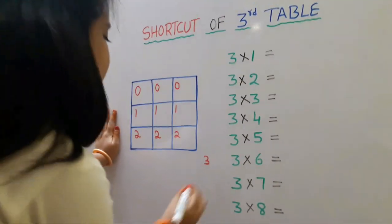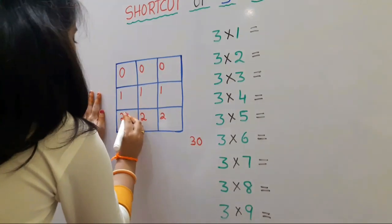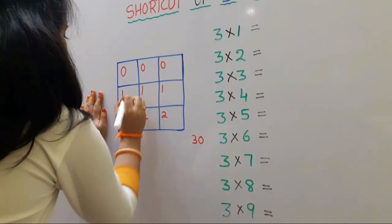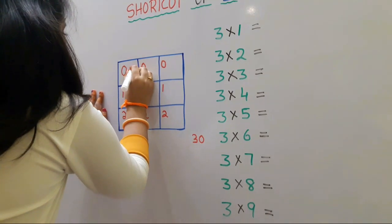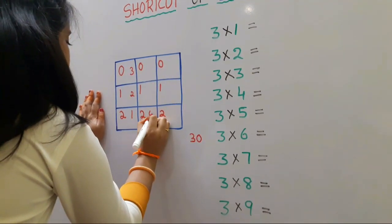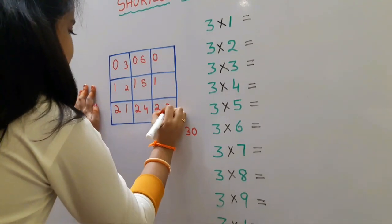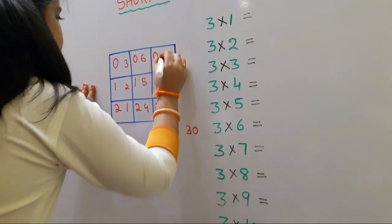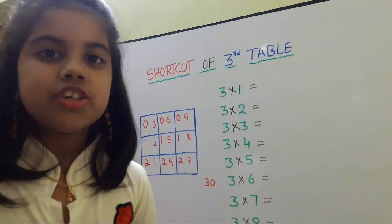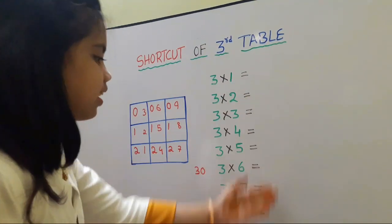Now we should write here 0. Now here we should write 1, 2, 3, 4, 5, 6, 7, 8, 9. We should write these values in the table.